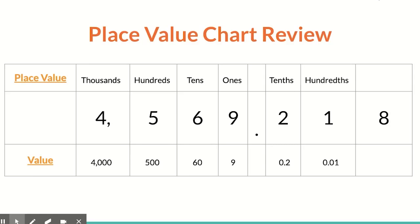They're called hundredths because a hundred hundredths would also give you one whole. Moving along to the eight, which is our smallest place value — our thousandths place. The value of eight thousandths looks like this, and this is called the thousandths place because it takes 1,000 of these to create one whole.